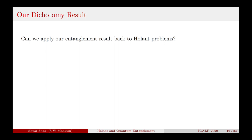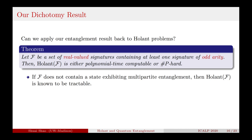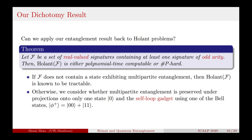We then applied our new quantum entanglement result back to Holant problems. We proved a complexity dichotomy for real-valued Holant problems where a signature of odd arity is available. If the signature set F does not contain a state exhibiting multipartite entanglement, then the problem is tractable. Otherwise, we consider whether multipartite entanglement is preserved under projections onto only |0⟩ and the self-loop gadget using one of the Bell states.